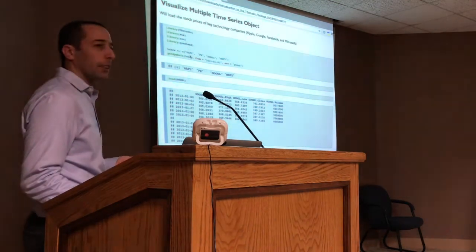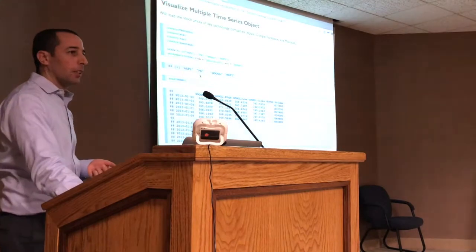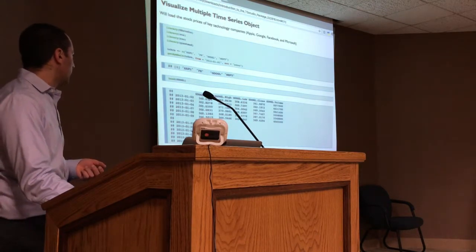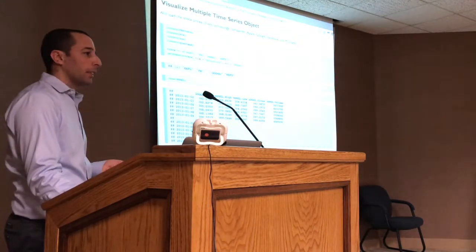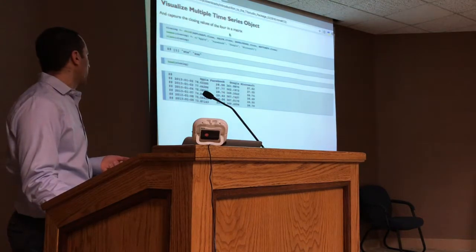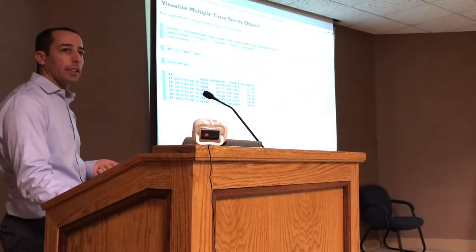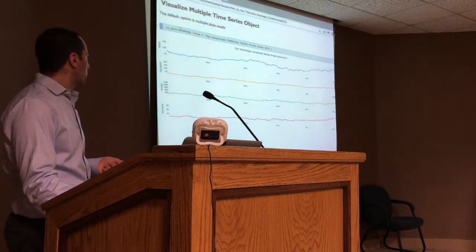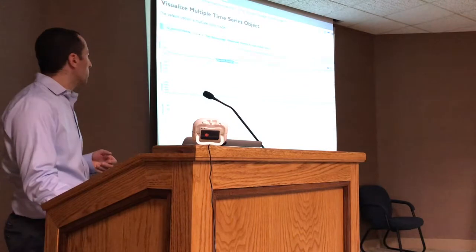Here's an example with multiple time series - I'm downloading stock closing prices for Apple, Facebook, Google, and Microsoft using XTS format. For example with Google I have the open price, high price, low price, and so on. I'm taking the closing prices, doing a cbind to create a new object called 'closing' with four columns - the closing prices for each stock. This is how it looks when you use the same function - you can add a title and get a multiple-plot display.